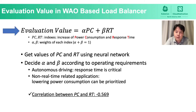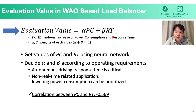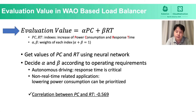In order to meet operating requirements of applications, WoW LB uses an evaluation function to determine the priority of task allocation. The parameters alpha and beta in the evaluation function are weights of the index, and their values can be changed depending on application requirements. For example, for applications related to self-driving, low response time is critical, whereas for non-real-time applications such as long-term weather observation sensors, lowering power consumption can be prioritized. In this demo experiment, using the object detection application, we observe a correlation of negative 0.569 between increased power consumption and response time.